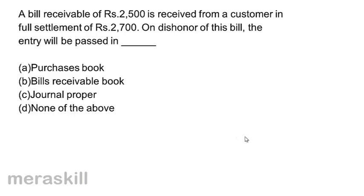A bill receivable of rupees 2,500 is received from a customer in full settlement of rupees 2,700. On dishonor of this bill, the entry will be passed in: A) purchase book, B) bills receivable book, C) journal proper, D) none of the above.